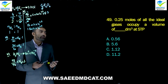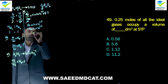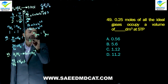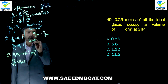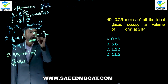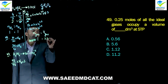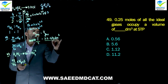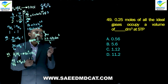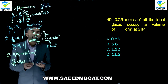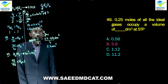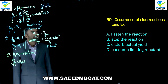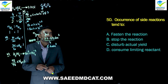Question 49: 0.25 moles of all ideal gases occupy what volume? One mole of ideal gas at STP = 22.414 dm³. For 0.25 moles, divide by 4: 22.414/4 = 5.6 dm³. Beta option (5.6 dm³) is correct. Again using the comparison method.